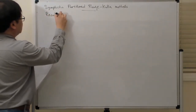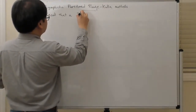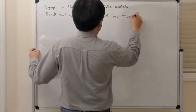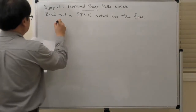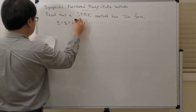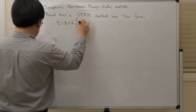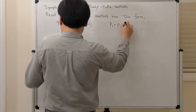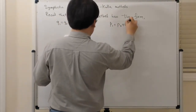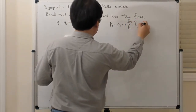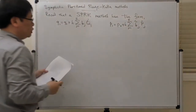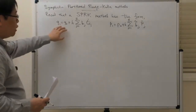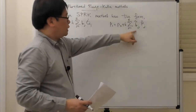So let me briefly remind you what a symplectic partitioned Runge-Kutta method looks like. Recall that a SPRK — a symplectic partitioned Runge-Kutta method — has the form: Q1 equals Q0 plus H times the sum from J equals 1 to S of Bj Qj-dot, and P1 equals P0 plus H times the sum from J equals 1 to S of Bj-tilde Pj-dot. So right now I'm really writing a partitioned Runge-Kutta method, and 'partitioned' refers to the fact that the position variables Q and the momentum variables P are treated differently — they have different quadrature rules, so there's a Bj and a Bj-tilde.